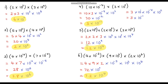Hopefully you got on quite well with those questions. In summary, there are two main steps to this process. First, reorder the numbers by grouping together all of the single-digit numbers and all of the powers of 10 to make things easier. Second, when you get your final answer, make sure it's in standard form — most of the time you'll need to divide one number by 10 or 100 and multiply the other by the same value. In the next video we're going to look at dividing numbers in standard form. Thanks for watching — take care.